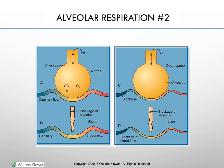C shows a high VQ ratio, called dead space — when ventilation exceeds perfusion, the alveoli lack adequate blood supply for gas exchange, characteristic of pulmonary emboli, pulmonary infarction, and cardiogenic shock. D is a silent unit — in the absence of both ventilation and perfusion, a silent unit occurs, seen with pneumothorax and severe acute respiratory distress syndrome.